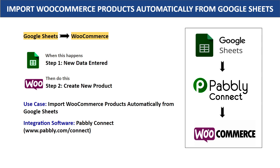You have two choices. The first choice is to copy all the details from Google Sheets, sort them out, and manually add a product in WooCommerce. The problem with this approach is it's very repetitive and tiresome. So I would suggest that you bring in some automation, so that whenever new data is entered in Google Sheets, it automatically creates a product in WooCommerce.